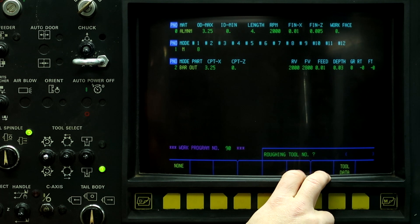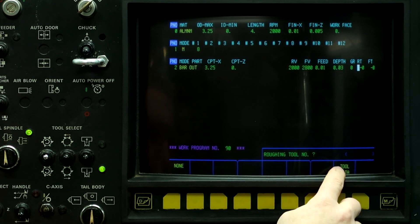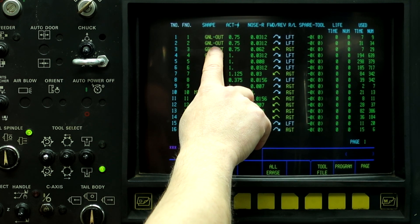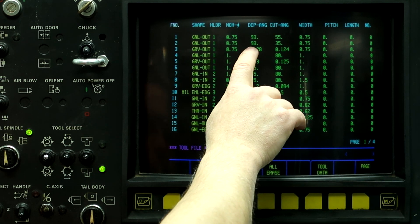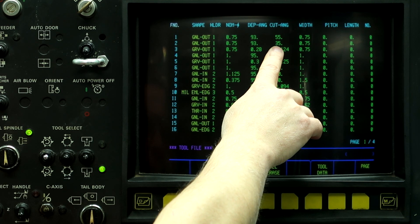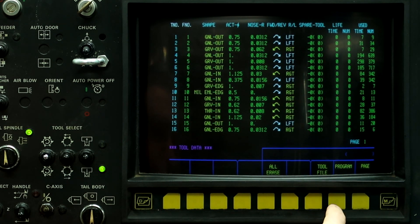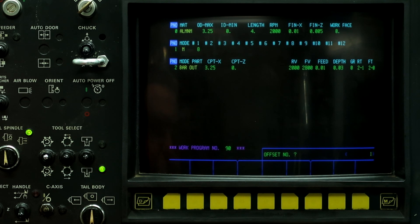And I'm going to machine it using a 35 degree diamond, push the tool data, and it's going to be tool number two, tool file, and it's a 35 degree insert. And go back to program. So tool two, offset number one, tool two, offset number one.